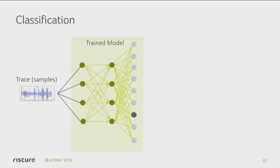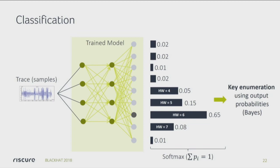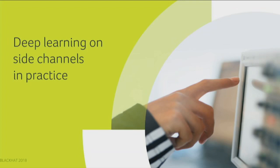Once we've trained this, we actually can do the classification. We input a trace that it's never seen before, it runs through the deep learning network, and the output — just like with the template attack — is a probability distribution over the different Hamming weights. And this allows me to calculate a probability distribution over key values. So it's a very compatible problem. We pulled this out and plugged it into our side-channel engine, and you can actually use the same key enumeration after this.